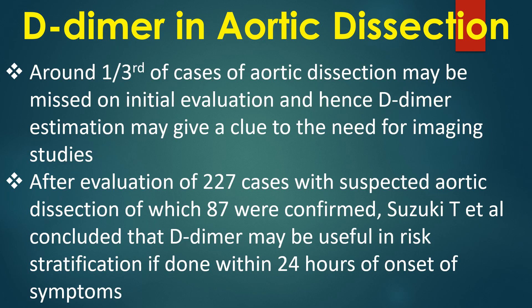Around one third of aortic dissection cases may be missed on initial evaluation, and D-dimer estimation may give a clue to the need for imaging studies. After evaluating 227 cases with suspected aortic dissection, of which 87 were confirmed, Suzuki and associates concluded that D-dimer may be useful in risk stratification if done within 24 hours of onset of symptoms.